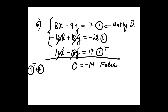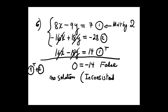The interpretation is that the system has no solution, so the system is inconsistent. This corresponds with option D — inconsistent.